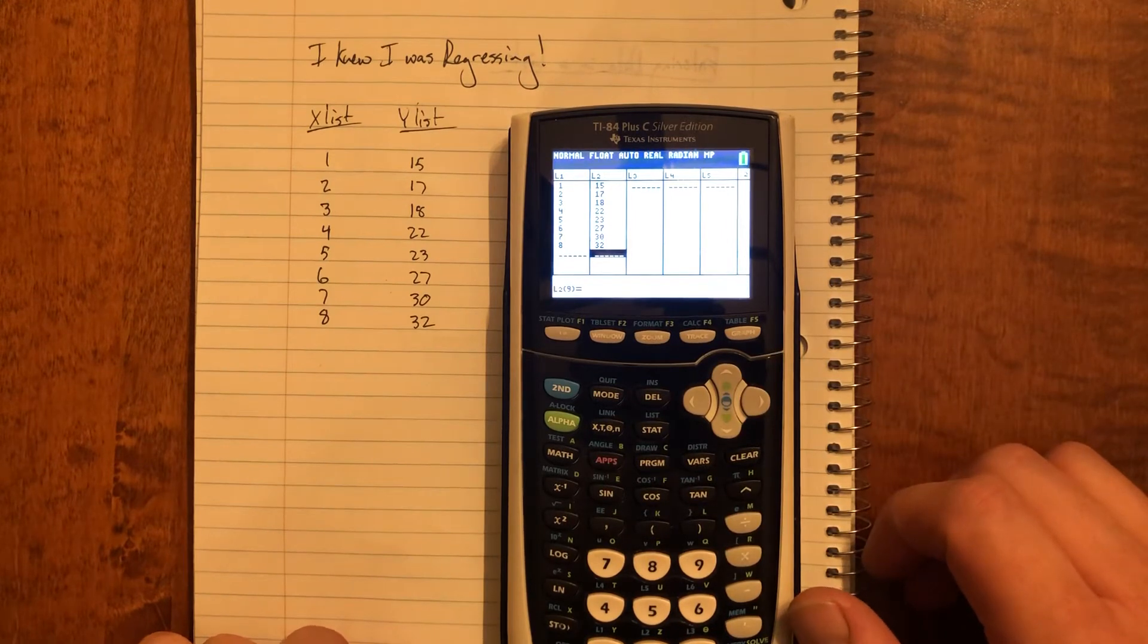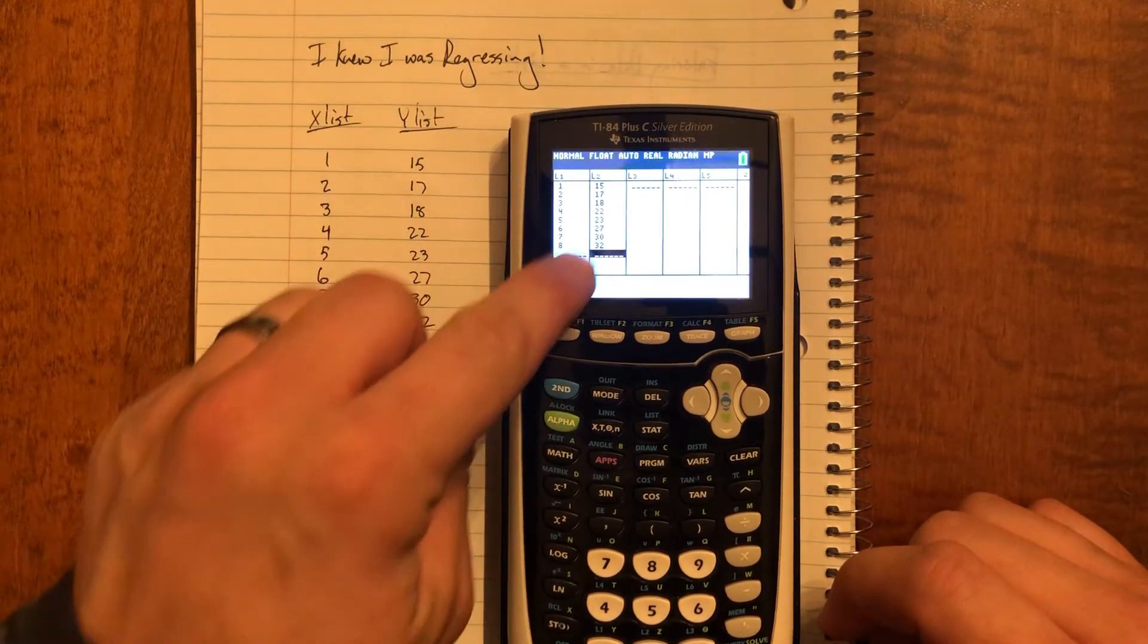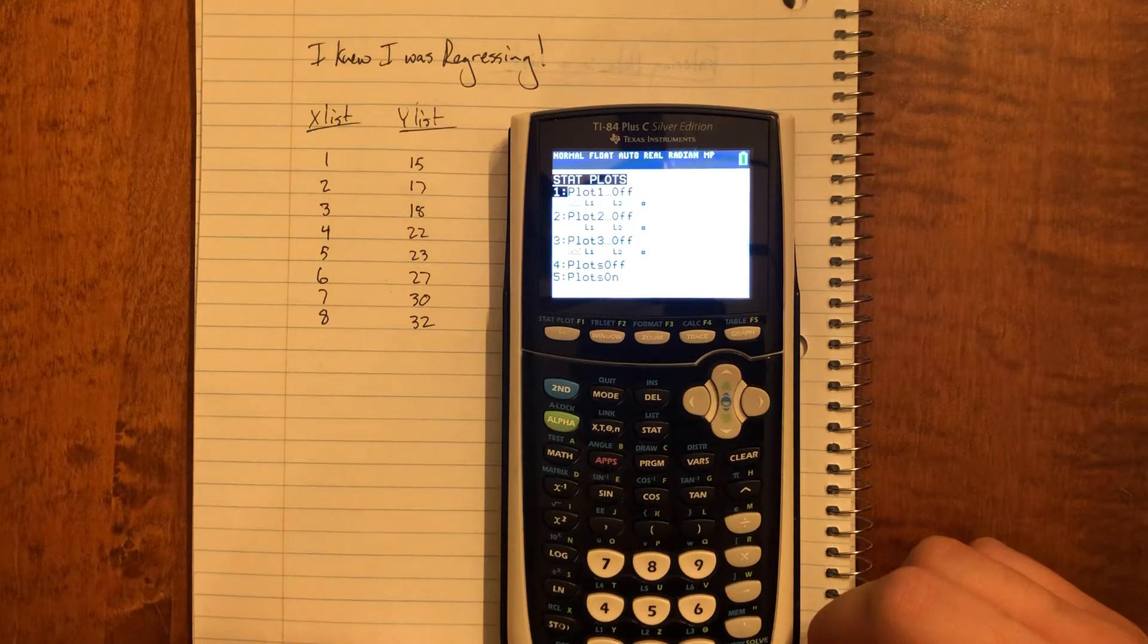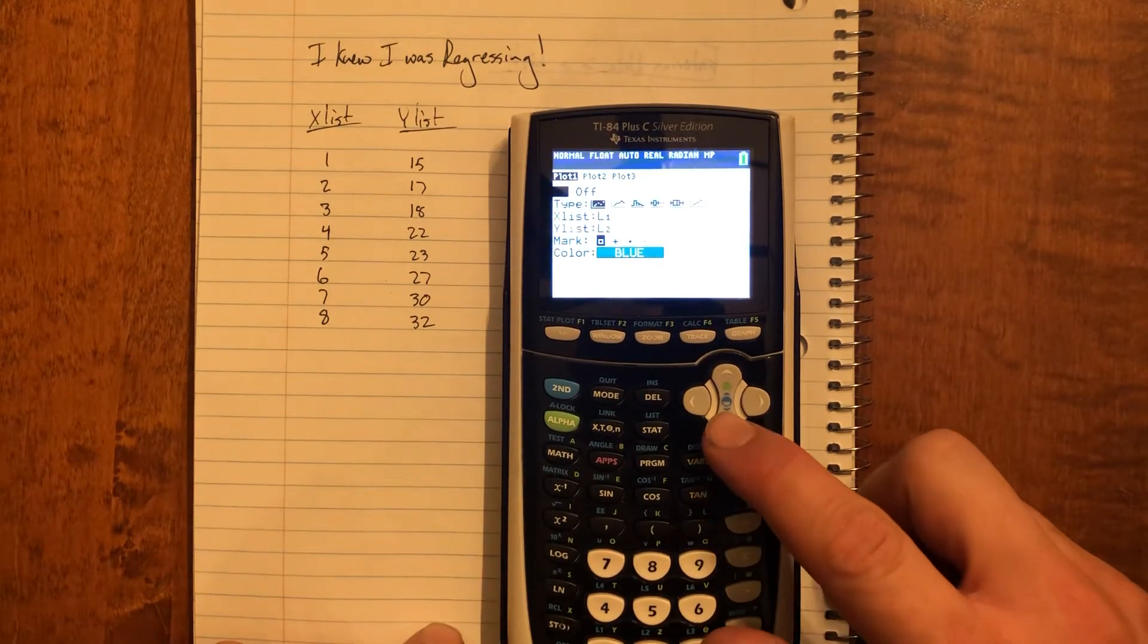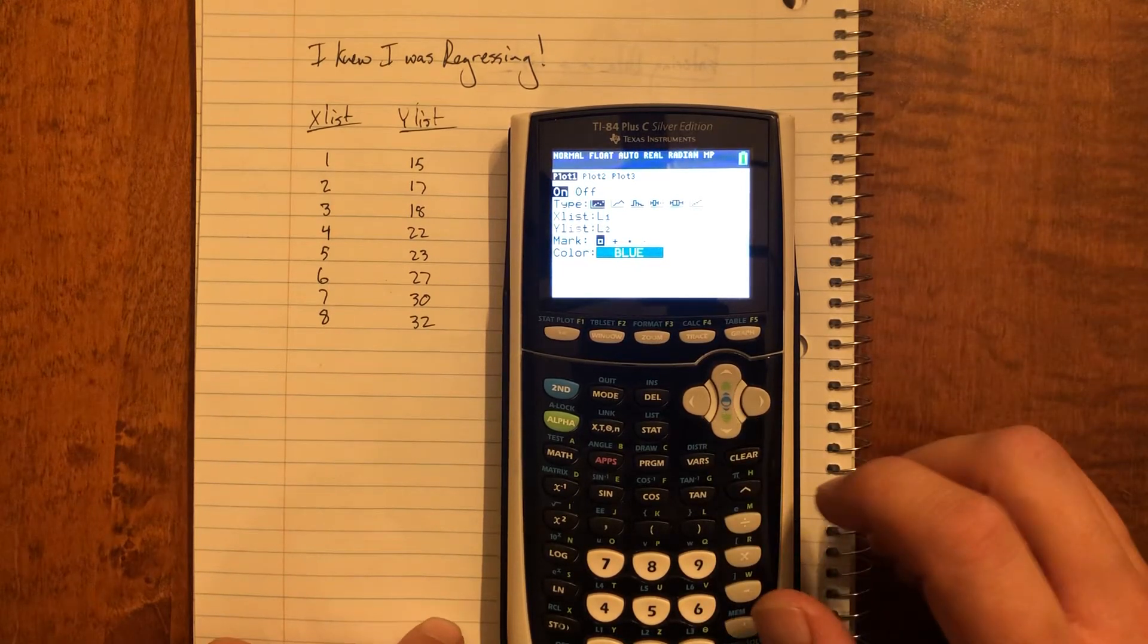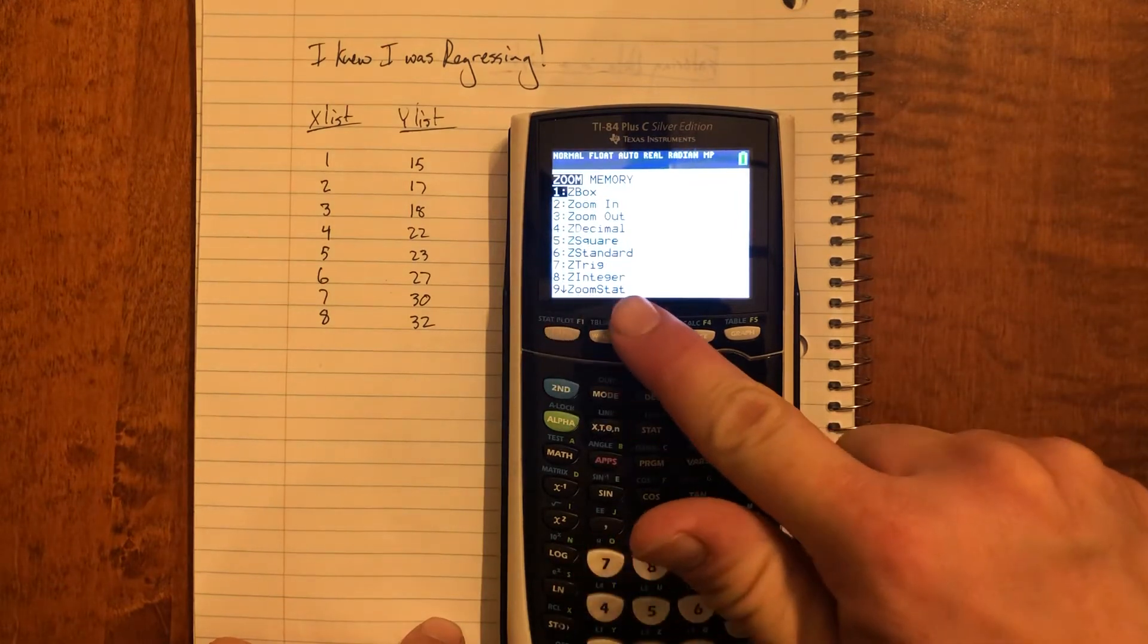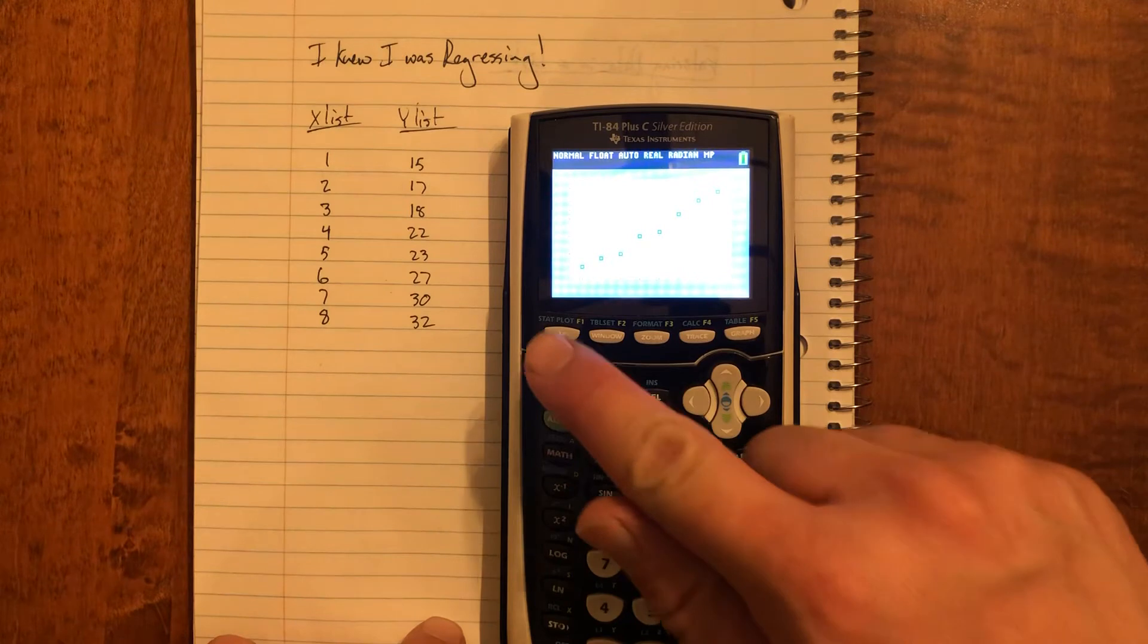Before we go and do any stats on this, we could always check to see if the stat plot shows some sort of relationship. If I wanted to plot x values against y values, I could go second function, y equals, for stat plot. I'm going to turn a plot on, and I think I'm going to do just a scatter plot of L1 and L2. Remember, you're going to want to adjust your zoom so that you're dealing with zoom stat, so nine. And hey, would you look at that, it looks like there's probably some sort of linear trend occurring here.